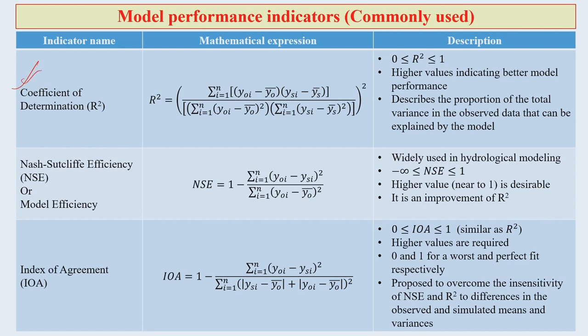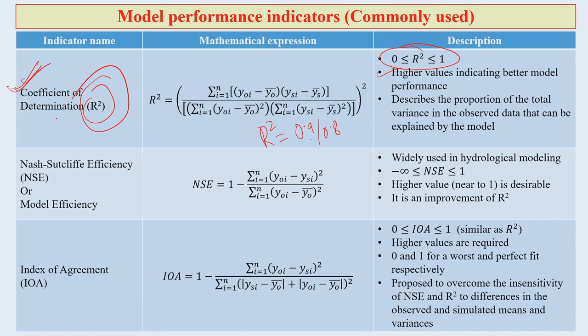The coefficient of determination (R²) lies between 0 and 1. Higher values indicate better model performance; for example, an R² of 0.9 or 0.8 is very satisfying. R² describes the proportion of the total variance in the observed data that can be explained by the model.